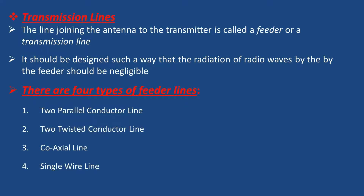There are four types of feeder lines or transmission lines: one is two parallel conductor line, two is two twisted conductor line, three is coaxial line, and four is single wire line.